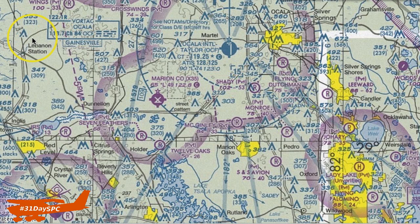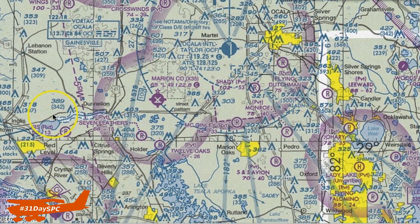Why is that? Think about the VFR cloud clearance requirements. Inside of echo, it's three miles visibility and 1000 above, 500 below, and 2000 feet horizontally from the clouds. What is it in golf airspace? Basically, don't stick your head into a cloud and everything will be okay. We are making the weather requirements more strict around these airports, which is why we have these transition areas around them — taking those more strict weather minimums and dropping them down a little bit lower over these airports.